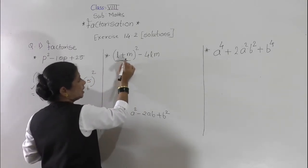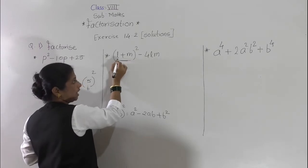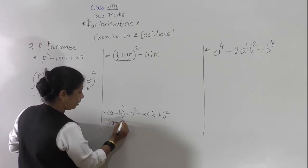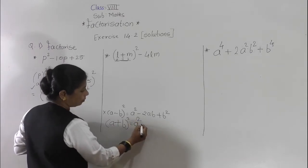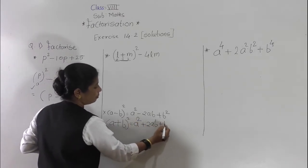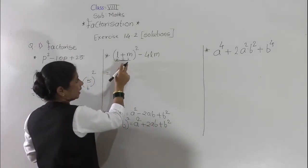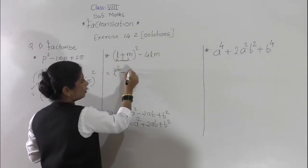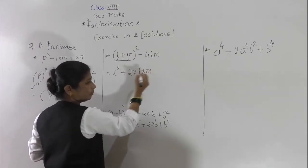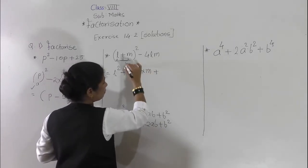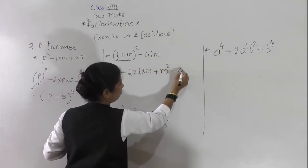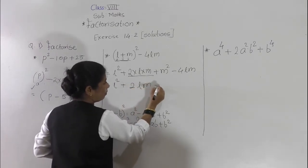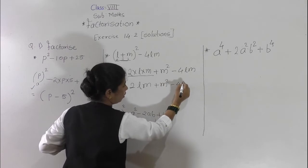What is the (a plus b) bracket squared identity? a plus b bracket squared equals a squared plus 2ab plus b squared. So according to that identity, we will expand this: a squared means l squared, plus 2ab means 2 into l into m, plus b squared means m squared, minus 4lm as it is. So we get: l squared plus 2lm plus m squared minus 4lm.